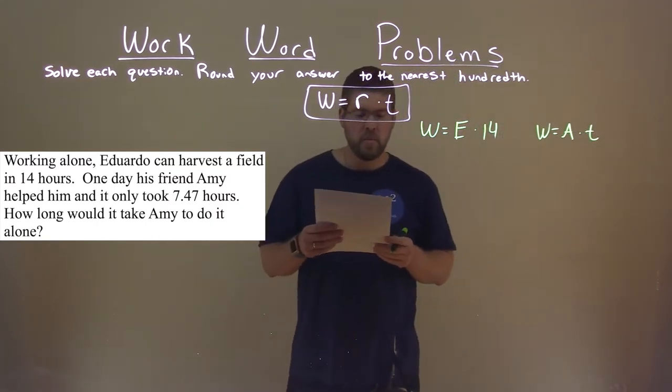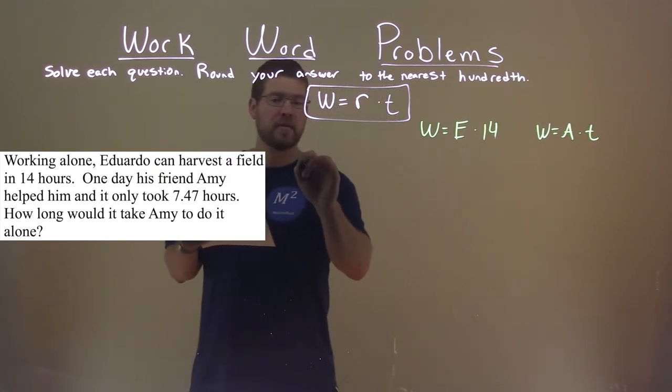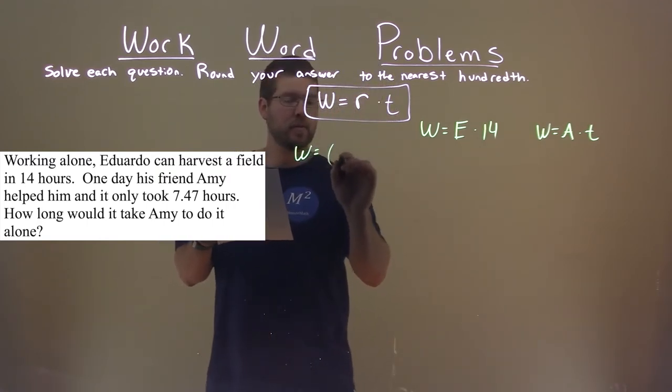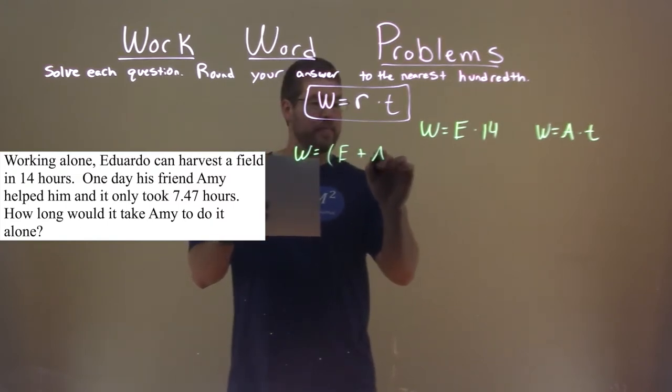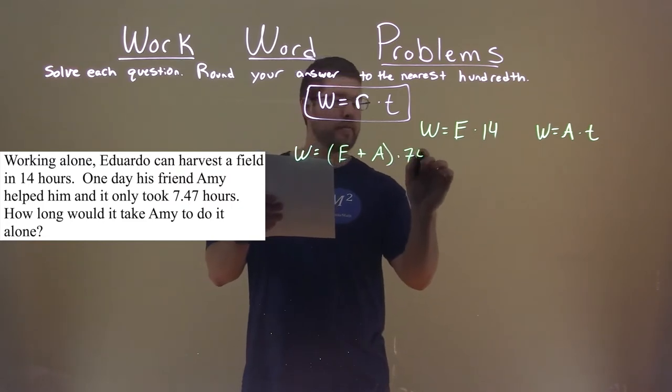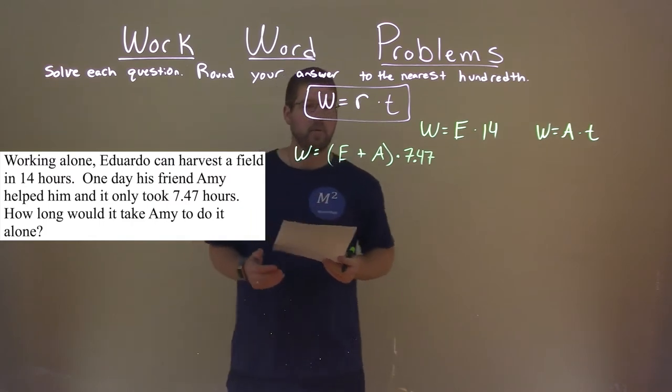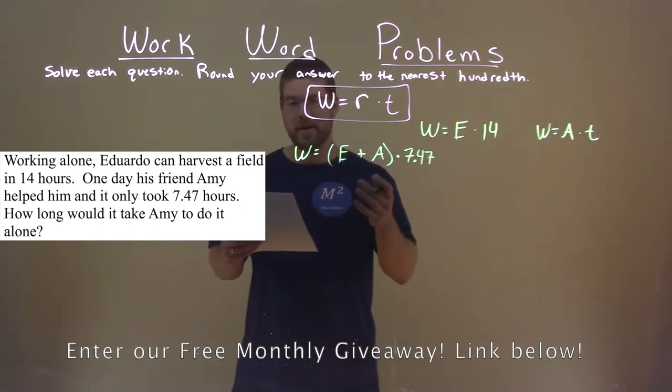Okay, but we do know how long it takes them if they did it together. So that same work, of harvesting a field, is equal to Eduardo's rate plus Amy's rate, and it took them a total of 7.47 hours. So, what are we going to do from here? We're going to work with this and see if we can find an answer.